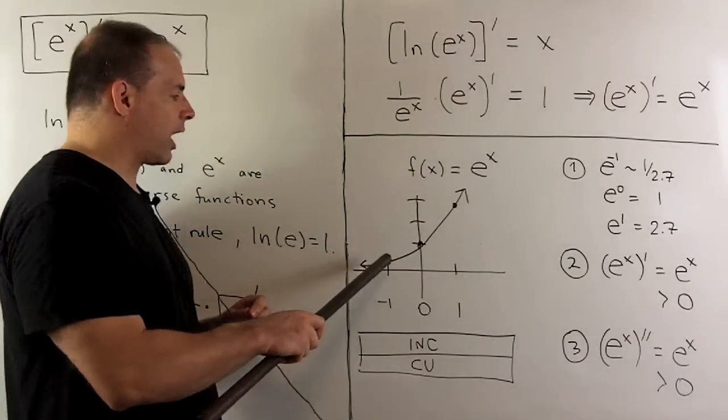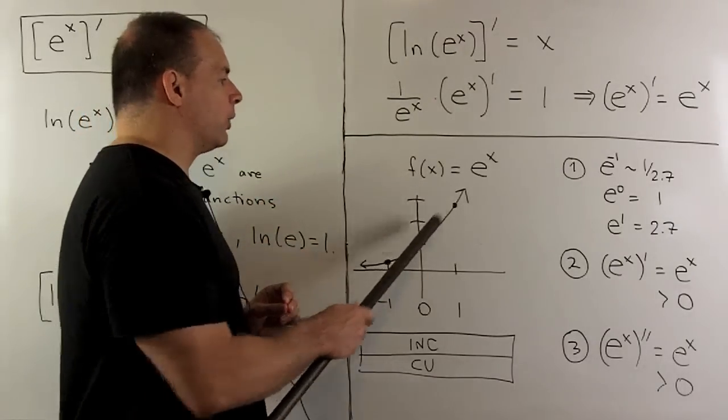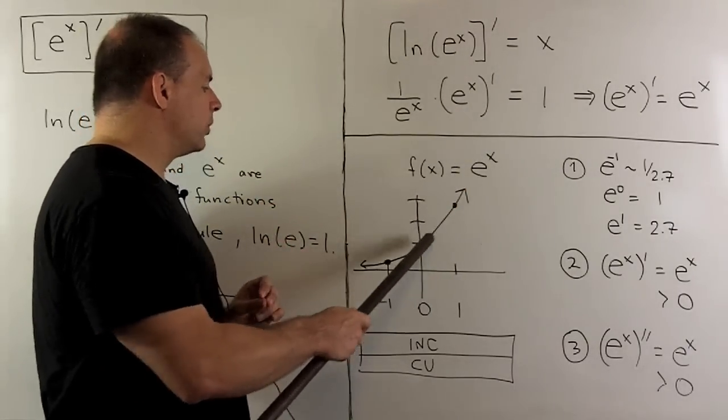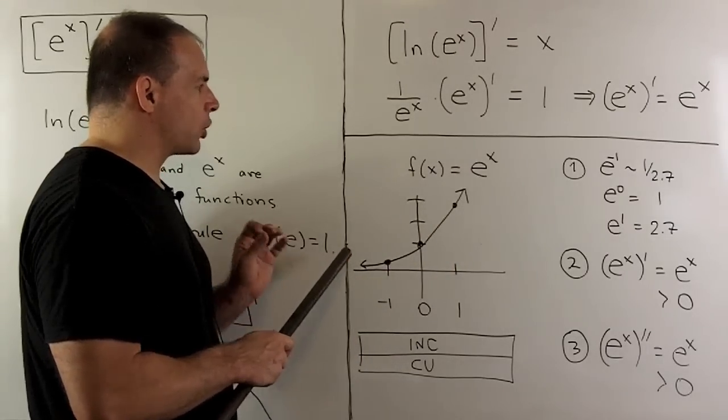So, we're going to get our three points on the graph here. Then, we connect the dots. To the right, we go off to infinity. To the left, we're going to have a horizontal asymptote at 0. And that's our graph of e to the x.